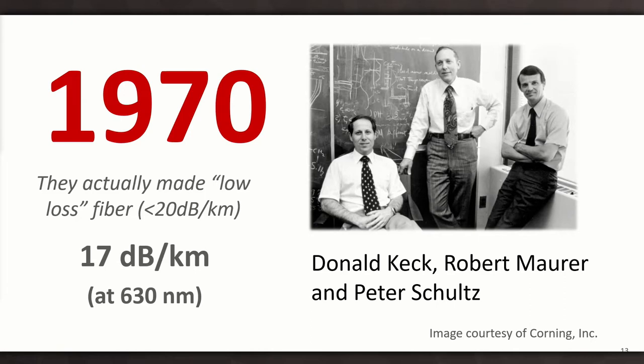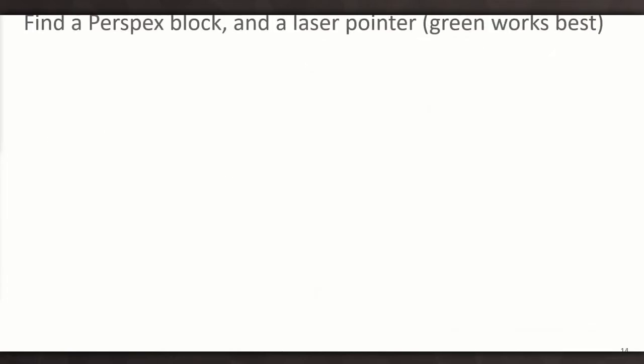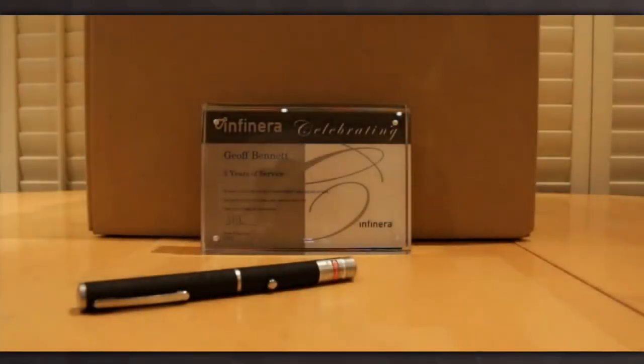1970, the magic year, because a group of researchers at Corning actually managed to make low-loss optical fiber. And they beat Kao's 20 dB number by quite a margin because they produced a 17 dB per kilometer fiber. Now, 3 dBs doesn't sound a lot, but it's actually half the attenuation because it's a logarithmic scale. So Donald Keck, Robert Maurer, Peter Schultz are highly renowned for their contribution.